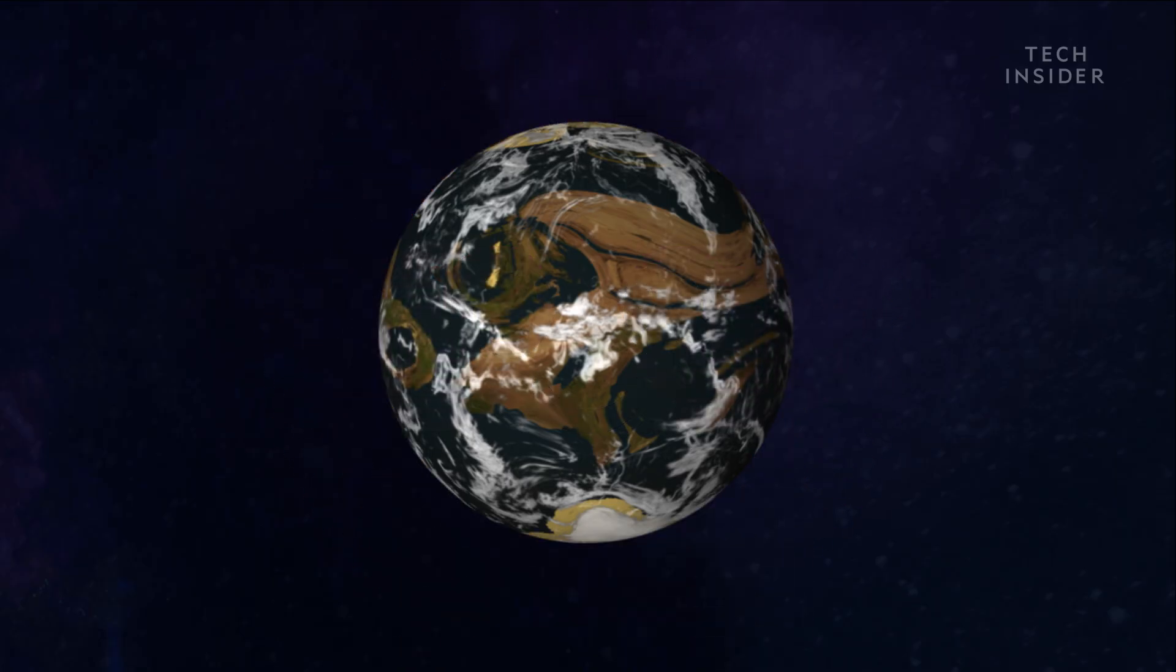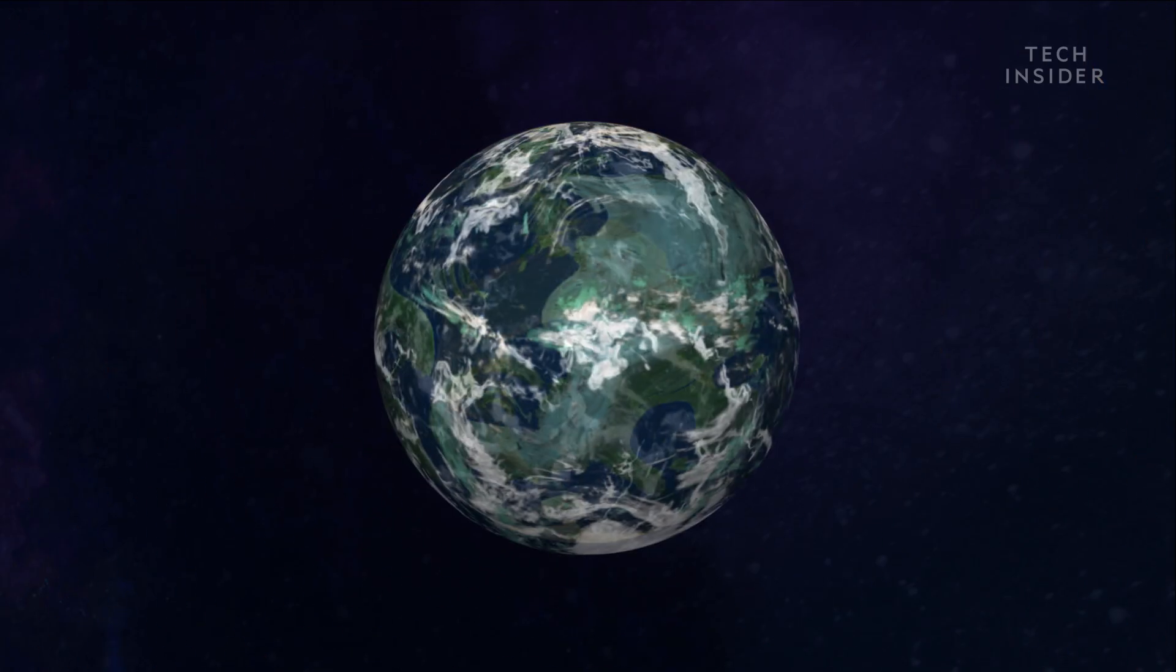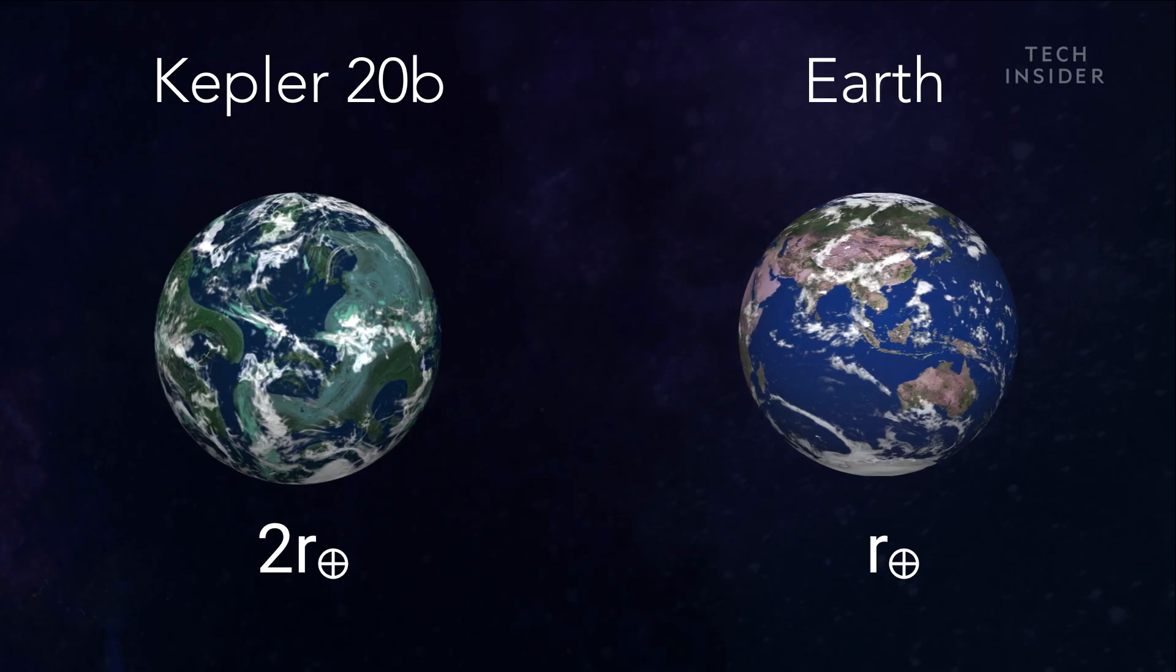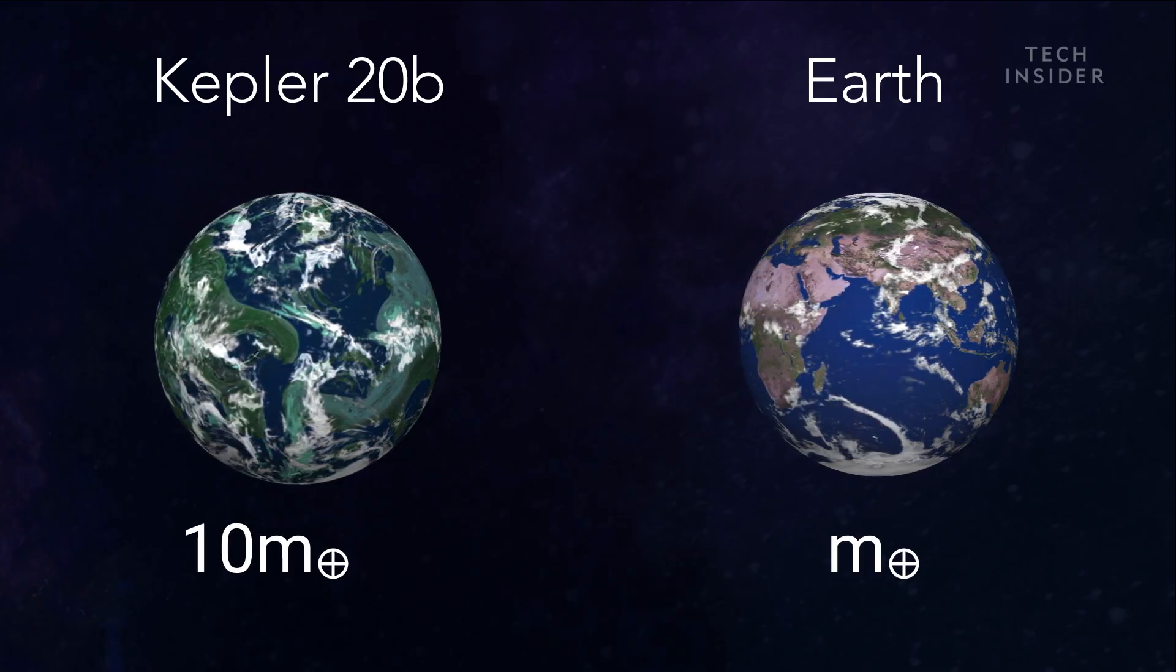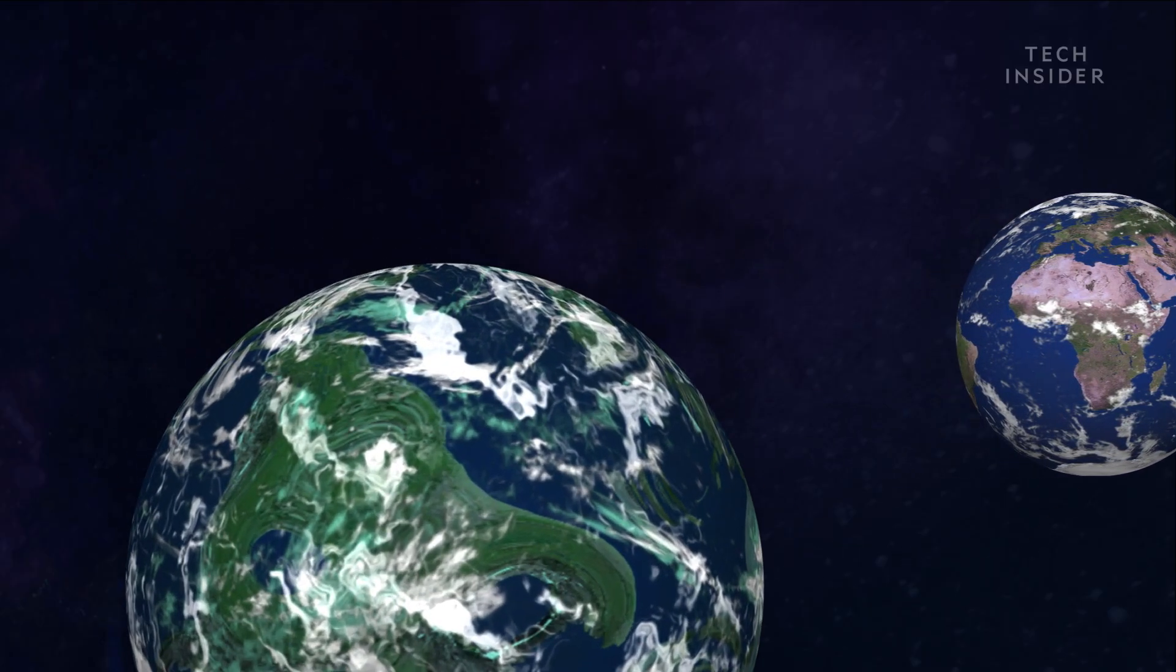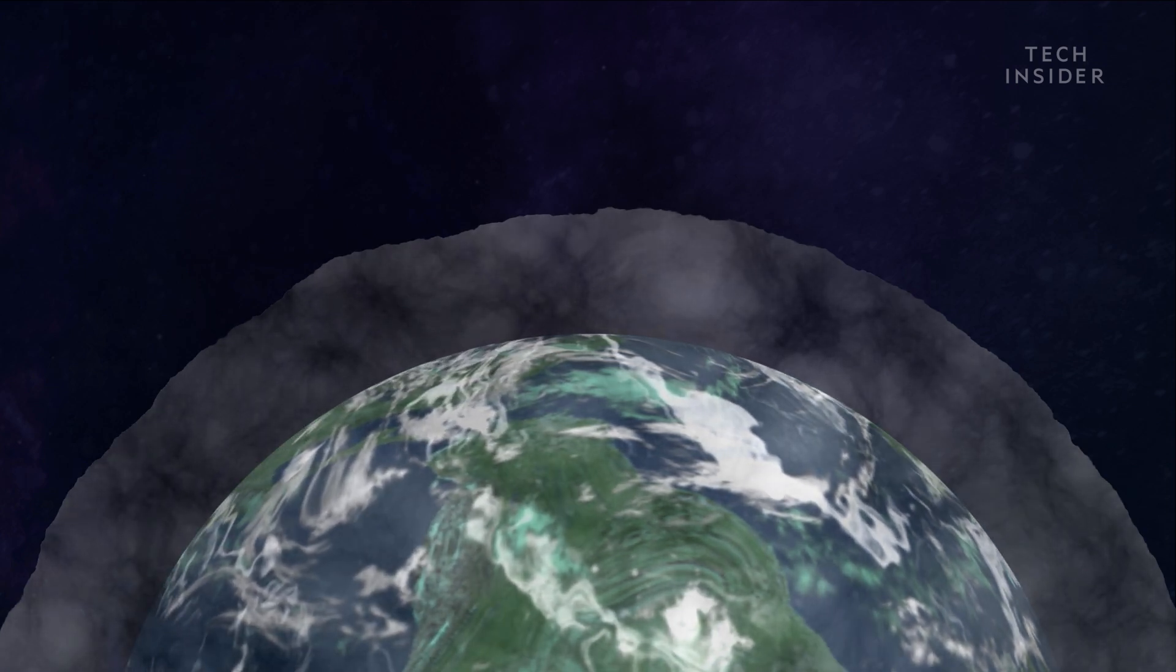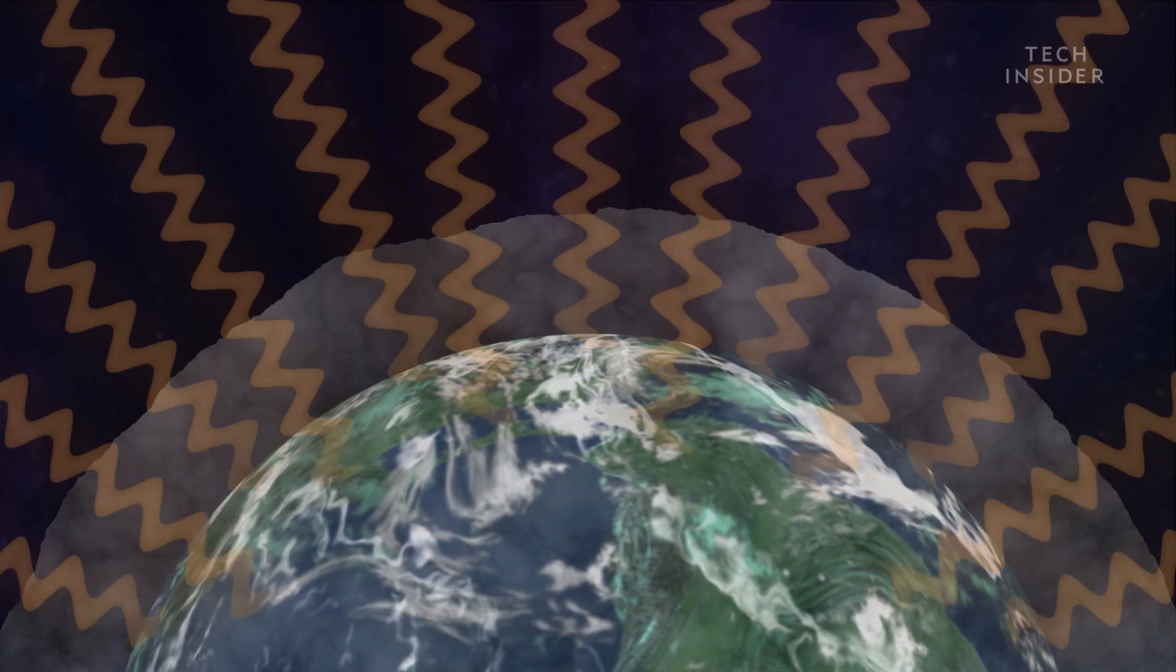That's because more massive planets have a stronger gravitational pull. Super-Earth Kepler-20b, for example, is nearly double the size of Earth and it's ten times more massive. This makes its surface gravity almost three times stronger. That stronger gravity means that the planet can hold on to more air molecules and form a thicker atmosphere, which is great for protecting against harmful space radiation.